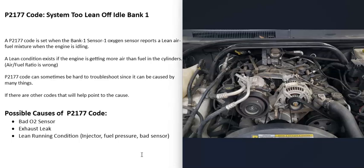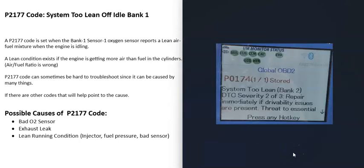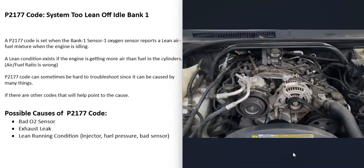If you have a V6 or V8, pay attention to whether you're getting codes on bank two as well. If you're getting lean codes on both banks, that points to something affecting the whole engine — like a weak fuel pump, a clogged fuel filter, or a bad sensor. For example, a P0174 (system too lean bank two) alongside P2177 would suggest a whole-engine issue. But if you're only getting lean codes on bank one, that points to something affecting only that side, like a bad injector.